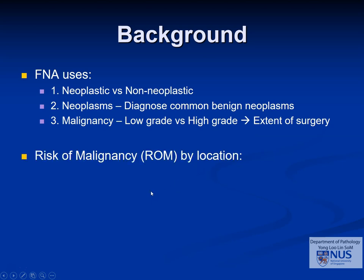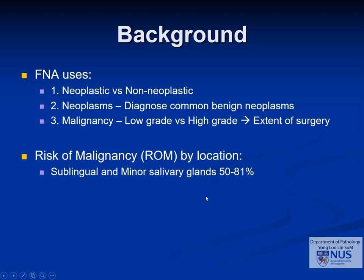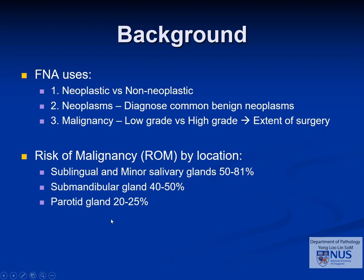The risk of malignancy differs by location. In the sublingual and minor salivary glands, it is actually fairly high — more than half of the cases that are needled turn out to be malignant. In the submandibular gland, it is about 50%. Thankfully, in the parotid gland, which is the commonest site that is FNA'd, it is lowest, at about 20% to 25%.